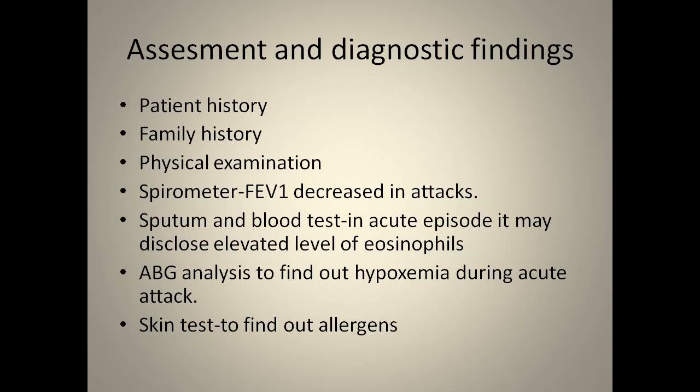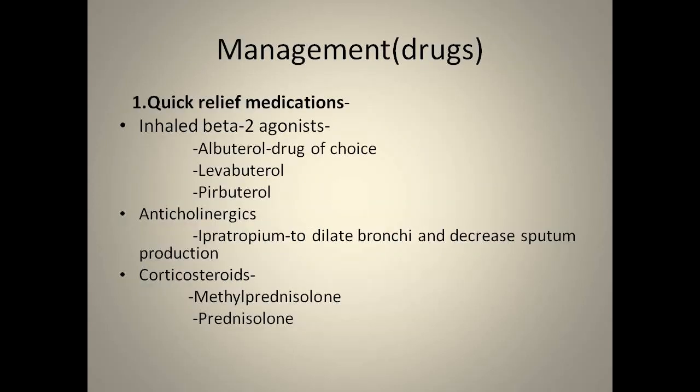In acute episodes, elevated levels of eosinophils can be seen in both sputum and blood, as asthma is a type of allergic reaction. ABG analysis is done to find out hypoxemia during acute attacks. Skin tests can be done to identify the allergens causing asthma.